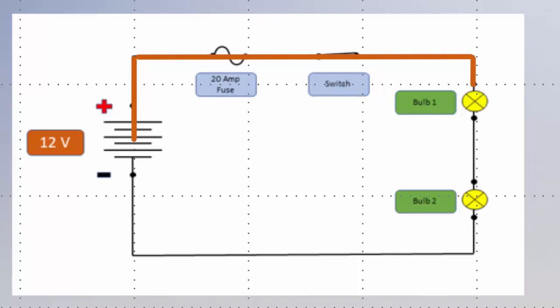Then we have the load part of the circuit. The load is where the voltage gets used up. In this case, the load is two bulbs in series. These two bulbs are going to share the voltage because of the way series circuits work.